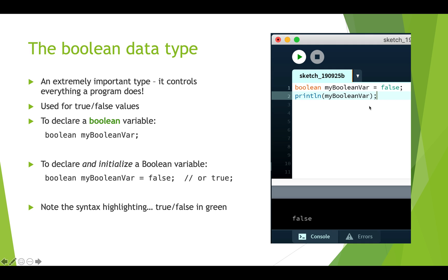If you look at what this looks like in Processing, notice the syntax highlighting. The data type is in orange and the value false is in green — if it were true it would also be in green. That's because true and false are keywords in Java and in Processing. You never want to call a variable true or false — these are reserved keywords that you should avoid using except when assigning values to boolean variables.